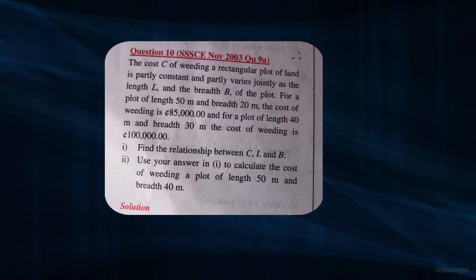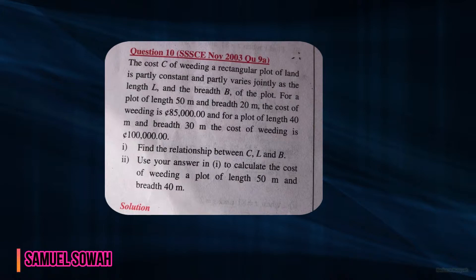The cost C of weeding a rectangular plot of land is partly a constant and partly varies jointly as the length L and the breadth B of the plot. For a plot of length 50 meters and breadth 20 meters, the cost of weeding is 85,000. And for a plot of length 40 meters and breadth 30 meters, the cost of weeding is 100,000.